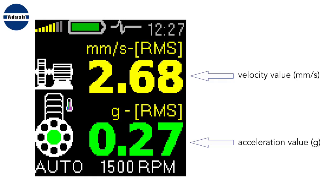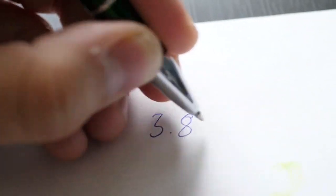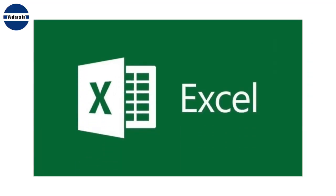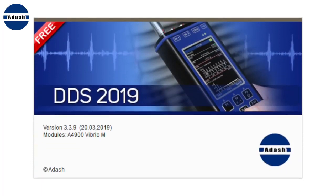The Adash Vibrio displays both values on first screen. Write the values on paper table or use Microsoft Excel or use the Adash DDS software which is free for Vibrio readings. The DDS software you can download from Adash website.